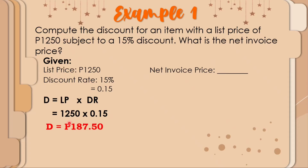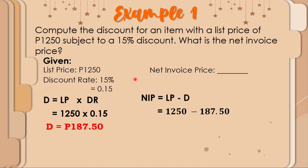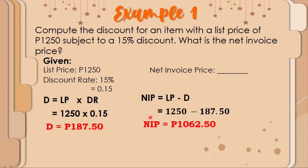Using your calculator, the discount amount is 187.50 pesos. So 1,250 will be reduced by 187.50. Now, using the formula for net invoice price: list price minus the discount amount — substitute 1,250 minus 187.50 — the net invoice price is 1,062.50 pesos.